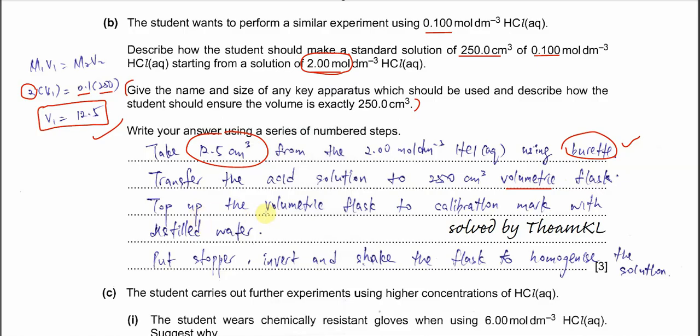After that, transfer the acid solution to a 250 cm³ volumetric flask. It must be a volumetric flask because this one is used to prepare a standard solution - do not use a measuring cylinder. Top up the solution to the calibration mark with distilled water. Normally you see one mark on the neck - this is the calibration mark. Add distilled water into this flask to top up the solution. Last step: put the stopper, then invert and shake the flask to homogenize the solution. Must use distilled water.